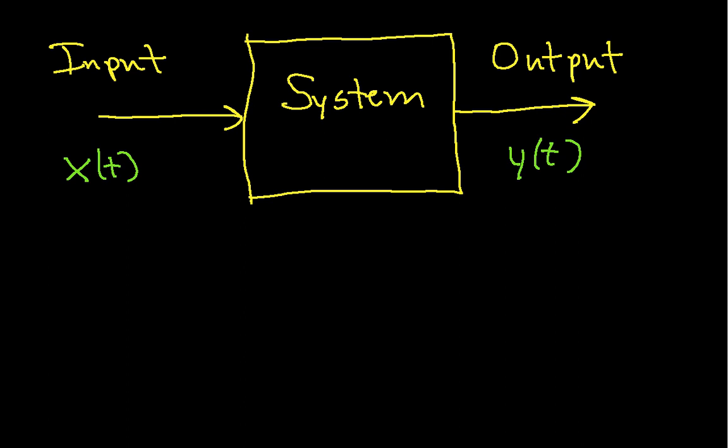The first characteristic is how many inputs and outputs it has. The second one we'll look at is stability, and the third one we'll look at is causality.